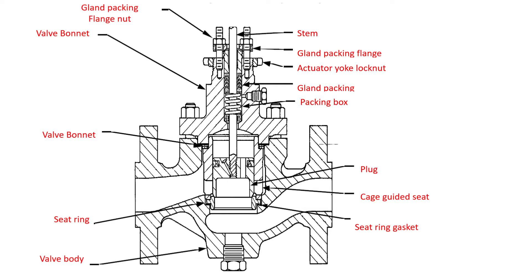We have a bonnet gasket, which provides a seal between the body and the bonnet mating surface. A cage gasket provides a seal between the bonnet and the cage mating surface. Next we have the gland packing. The packing prevents leakage along the valve stem, so the process fluid contained in the trim doesn't leak through the bonnet. The packing is compressed to form a tight seal between the packing box and the valve plug stem by tightening the packing flange nuts. As the nuts are tightened, the packing flange transfers the compressive load to the packing.